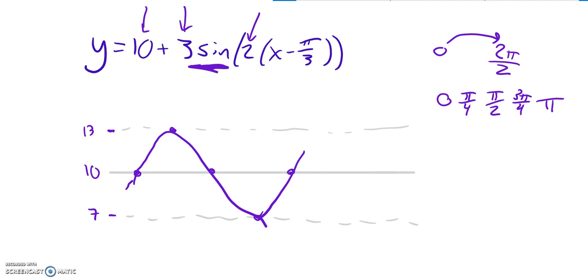And then now I have this minus π over 3. What that does is that shifts everything right, π over 3. So I'm going to add π over 3 to all these. So 0 plus π over 3, π over 3. That's pretty easy.